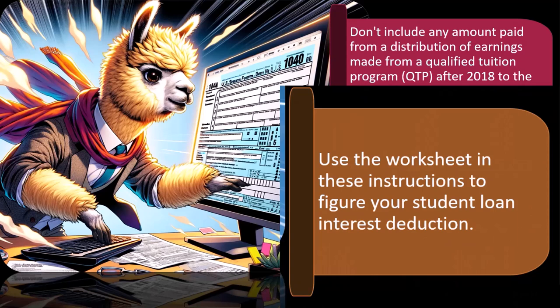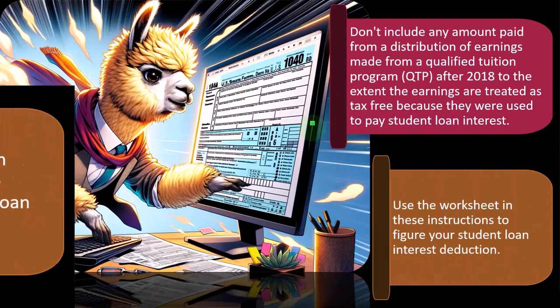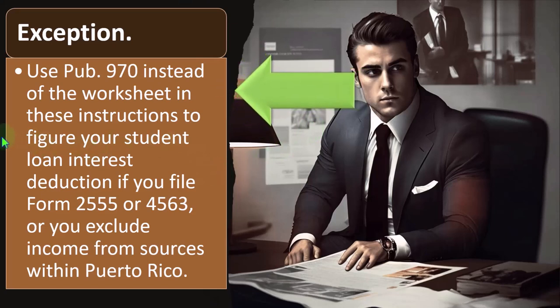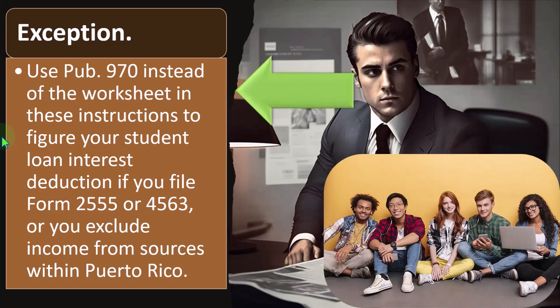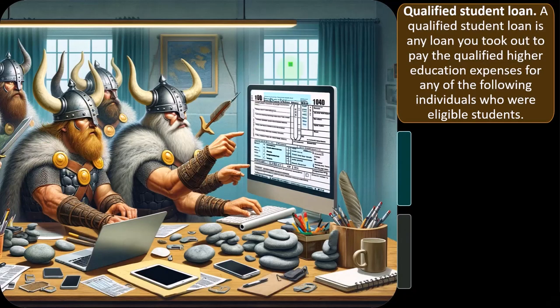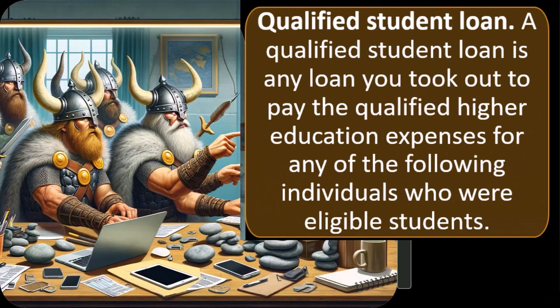Use the worksheet and these instructions to figure your student loan interest deduction. Exception: use Publication 970 instead of the worksheet and these instructions to figure your student loan interest deduction if you file Form 2555, because you might have foreign income in that case, which often complicates the calculation, or Form 4563, or you exclude income from sources within Puerto Rico. All right, so let's get into what is a qualified student loan.